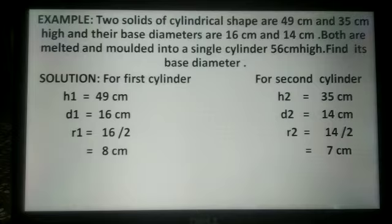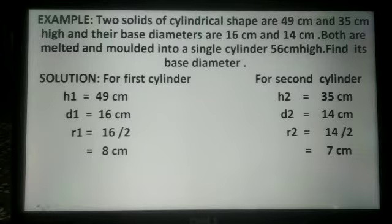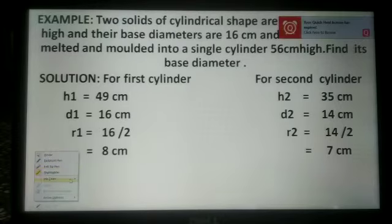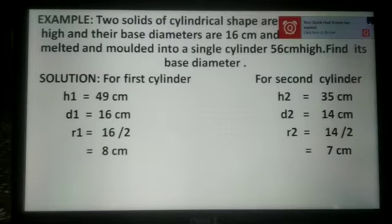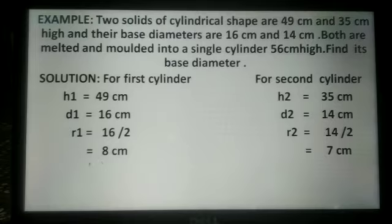In this solution, first we are taking the first cylinder. Its height is h1, which is equal to 49 cm. Diameter is d1, which is equal to 16 cm. So radius r1 is 16 divided by 2, which equals 8 cm.